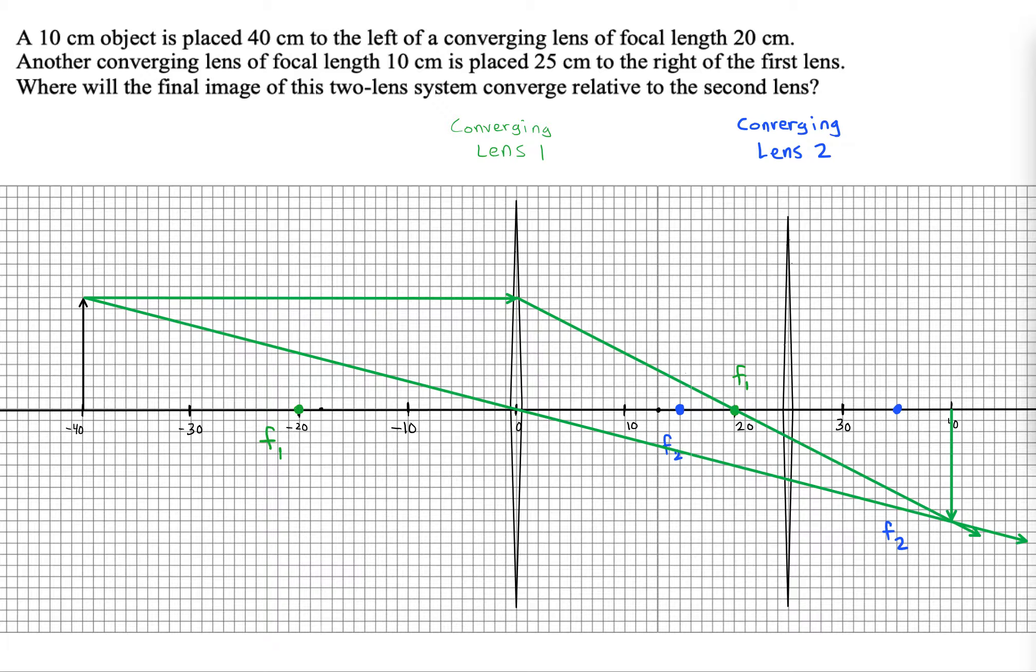They wouldn't really pass through that image because they're going to be bent before they ever get a chance to do so. So let's just write down that this is our original object and then this thing that's formed is going to end up being a virtual image.